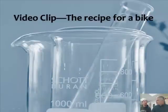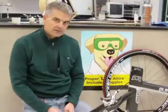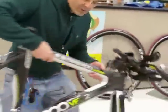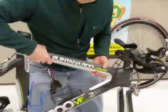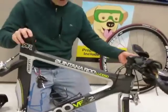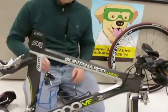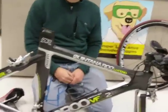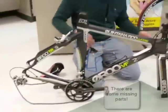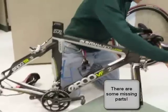I think we should do a little video clip to help us understand this concept of predicting products. Here I am with my bicycle — this is actually my racing bicycle. That's a bike? It's a bike. Well, it's kind of a bike. It's got some problems. I don't think I could ride that in a race, Mr. Sams.